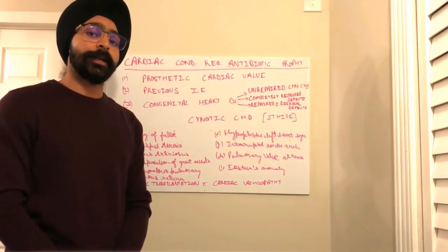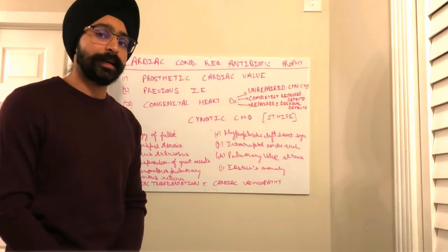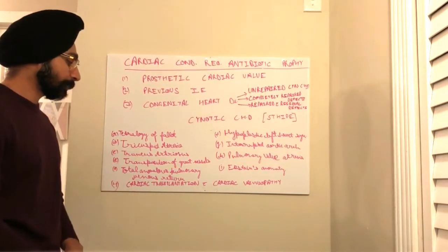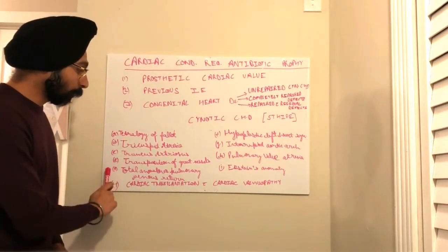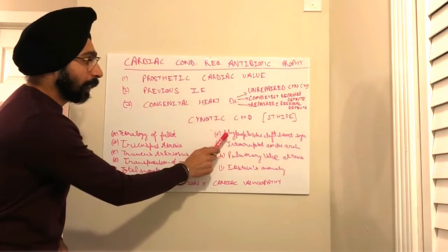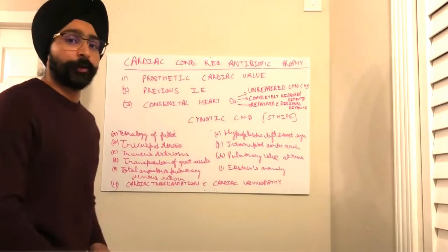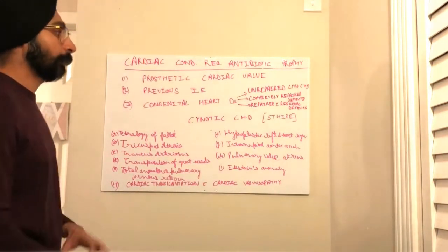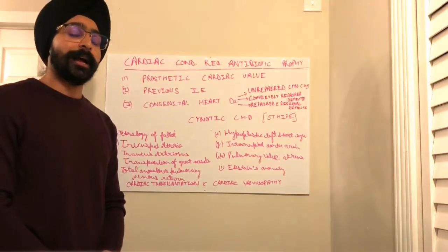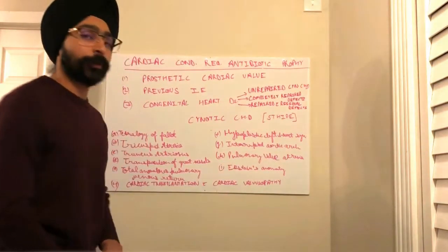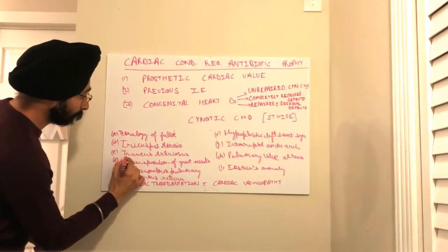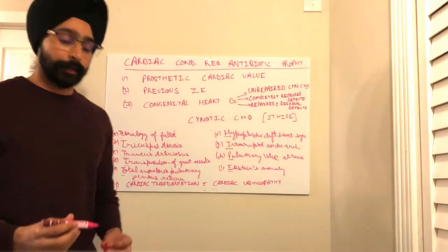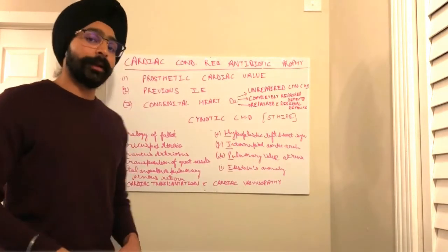The third condition is congenital heart disease. The conditions include: tetralogy of Fallot, tricuspid atresia, truncus arteriosus, transposition of great vessels, total anomalous pulmonary venous return, hypoplastic left heart syndrome, interrupted aortic arch, pulmonary valve atresia, and Ebstein's anomaly. To help you remember them, I have made a mnemonic: 5T HIGH — the 5 T's refer to the first five conditions, and H, I, G, H correspond to the remaining ones. In this way you will easily remember all nine conditions.